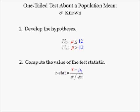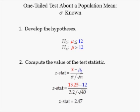Step 2: we compute the value of the test statistic. Since the sample mean x-bar is equal to 13.25, the hypothesized value of population mean mu is equal to 12, the population standard deviation is equal to 3.2, and the sample size is 40, the z-stat equals 2.47.